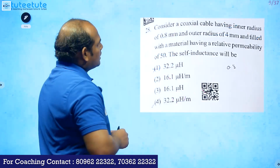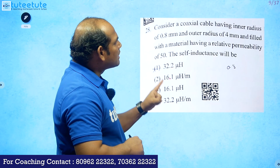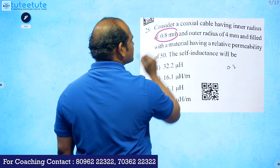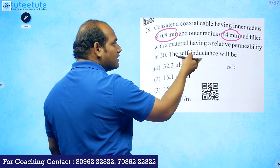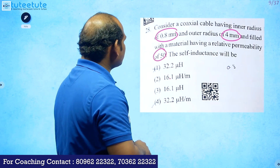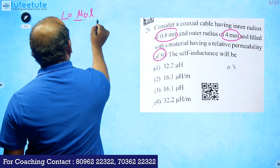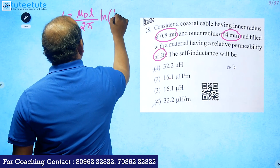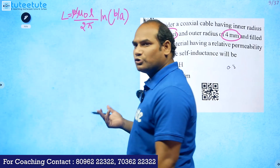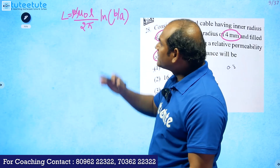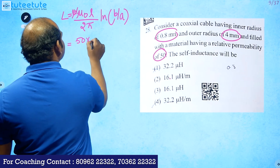The next question is about a coaxial cable. The inner radius a = 0.8 mm and outer radius b = 4 mm, filled with a material having relative permeability μᵣ. The self-inductance formula is L = μ₀μᵣl/(2π) × ln(b/a).